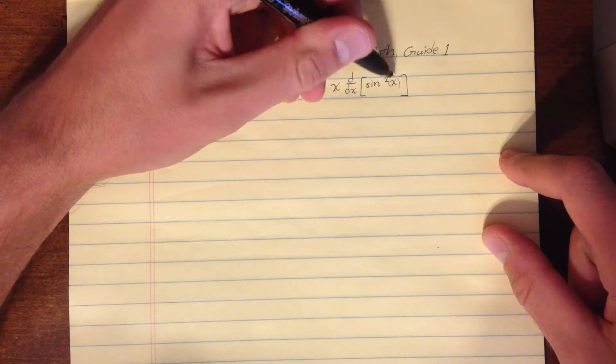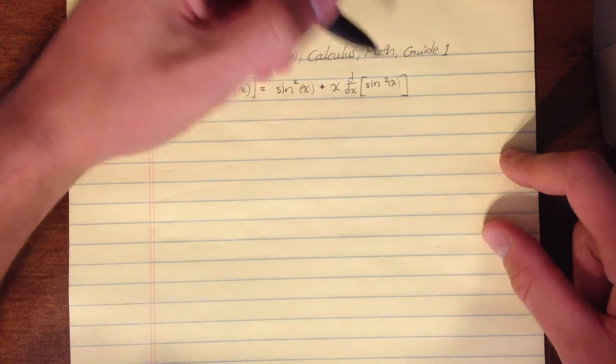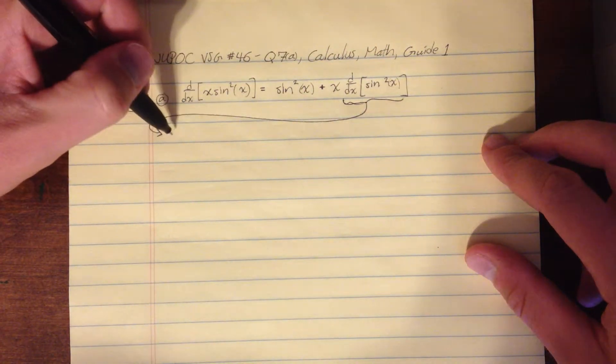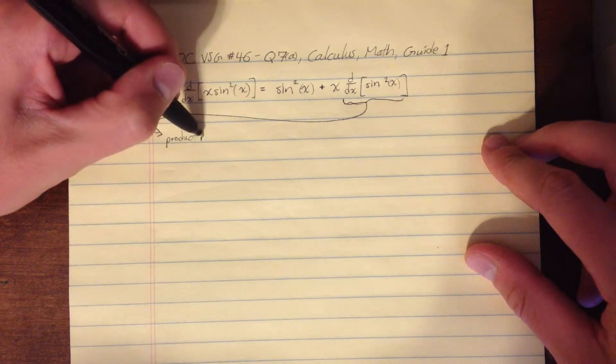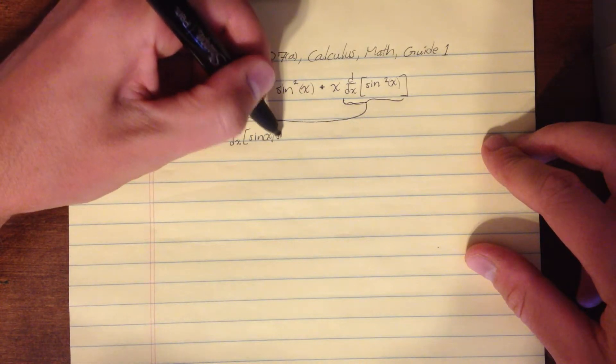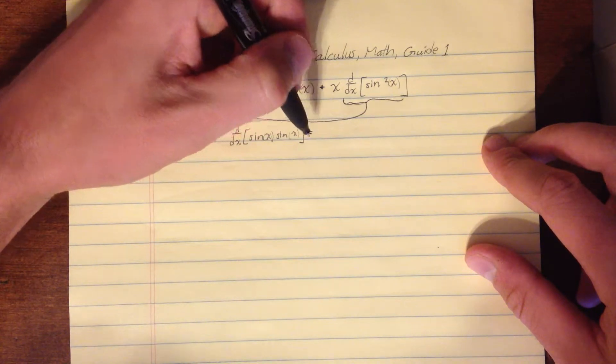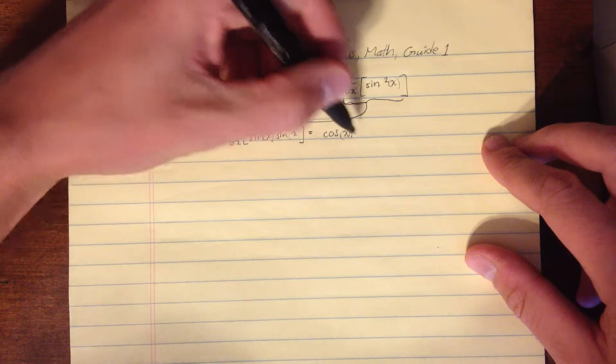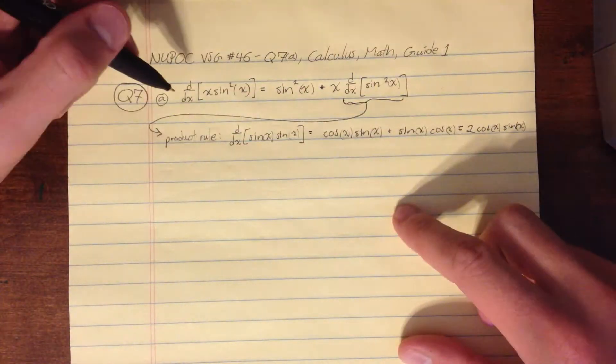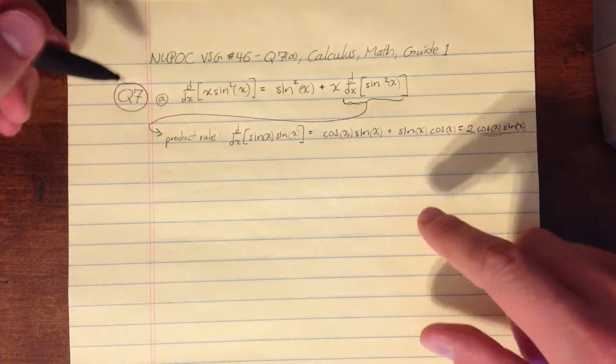So this is where we can either do chain rule, or we can just do the product rule again. So let's take this over here, and let's do it with product rule first. Product rule, so we would have d/dx sine squared of X, so that's just sine of X times sine of X. So that will be the derivative of the first times the second, so that will be cosine X sine X plus the derivative of the second times the first. So that is also going to be sine of X cosine of X, so we'll get 2 cosine of X sine of X. And then we bring this up, multiply it by X, and add it to our sine squared of X.